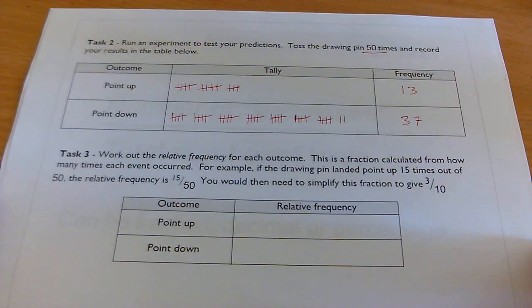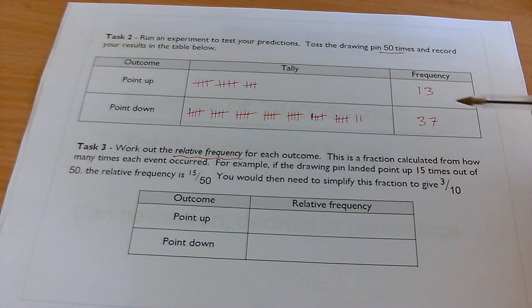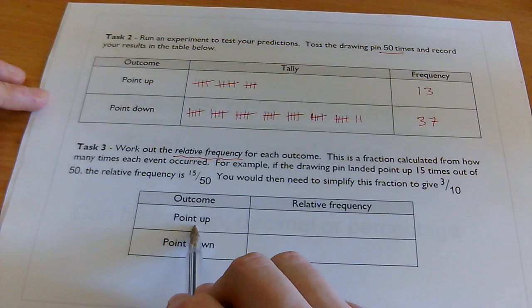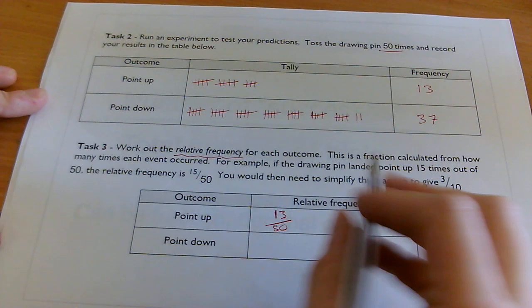Now when you've got this, you can produce something called a relative frequency, which is basically just a fraction that says, that's the bell, that says how likely things are to happen out of the total number of times you did the experiment. So in this case, point up, well, it was 13 times out of 50. And sometimes you can simplify that, but in this case we can't because 13 is a prime number.